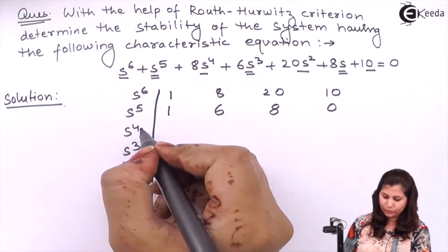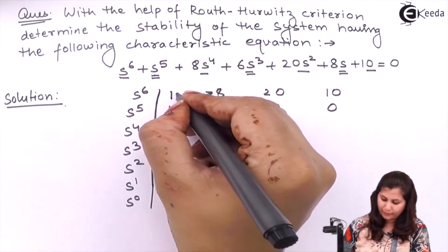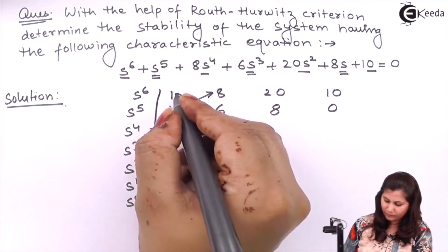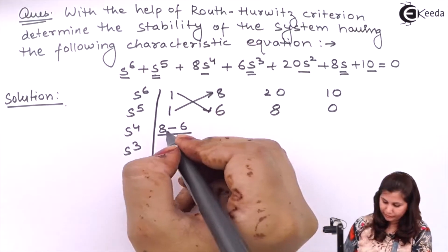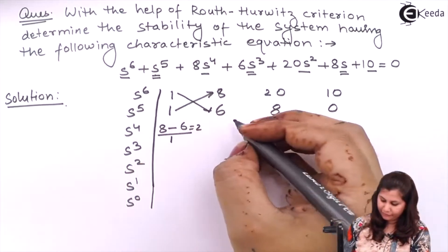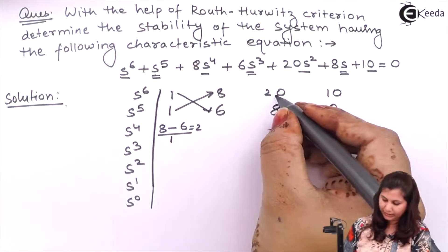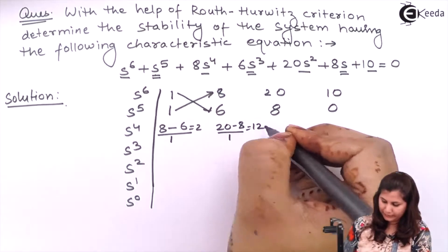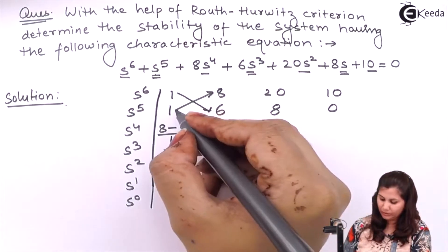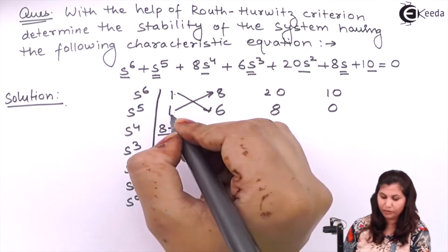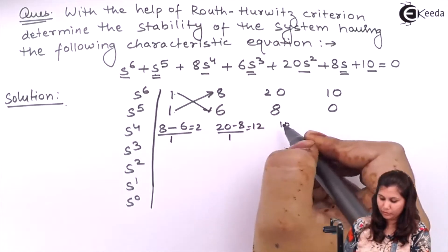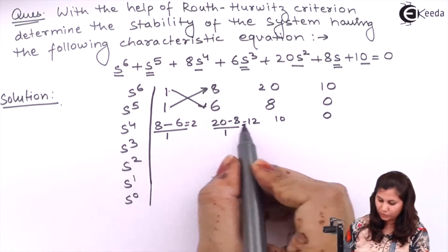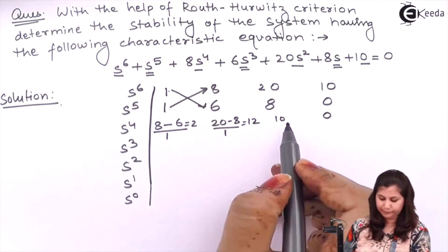For the S⁴ row: the first coefficient is (1×8 − 1×6)/1 = 8 − 6 = 2. Next coefficient is (1×20 − 1×8)/1 = 12. Next is (1×10 − 1×0)/1 = 10. So the S⁴ row is: 2, 12, 10.